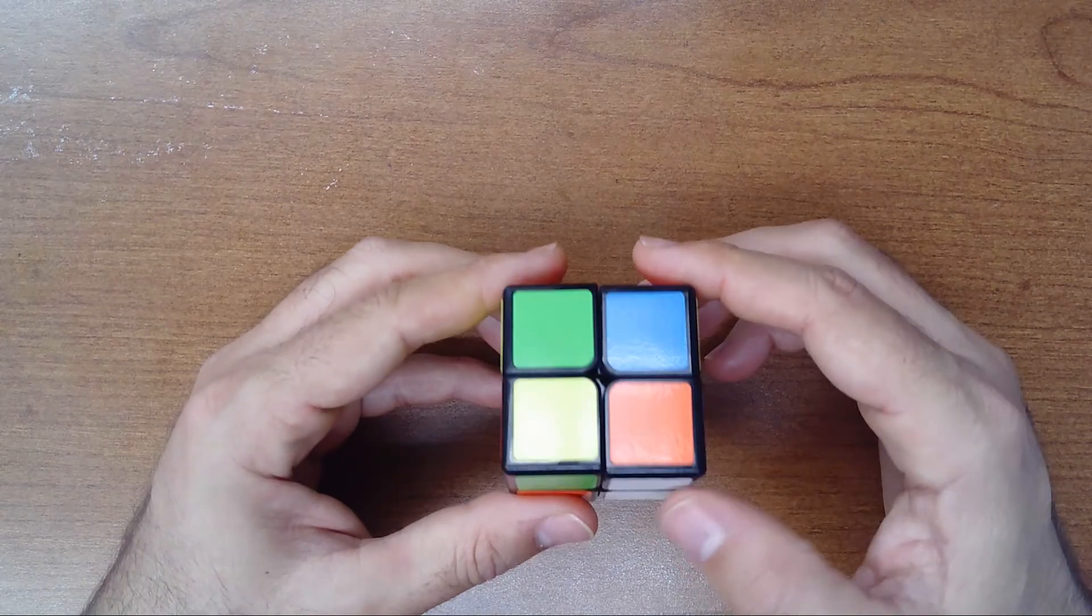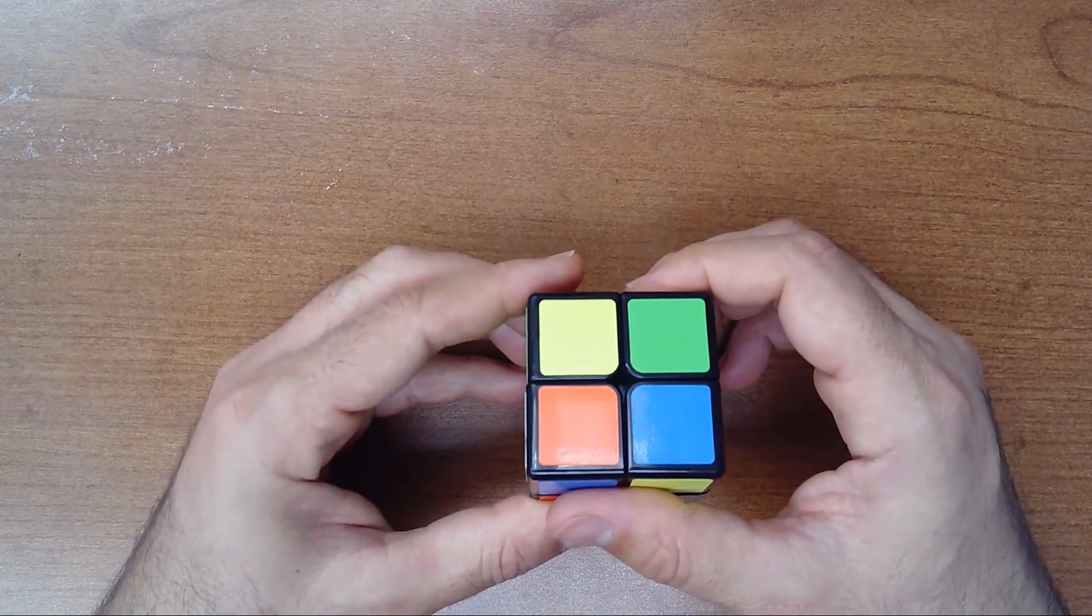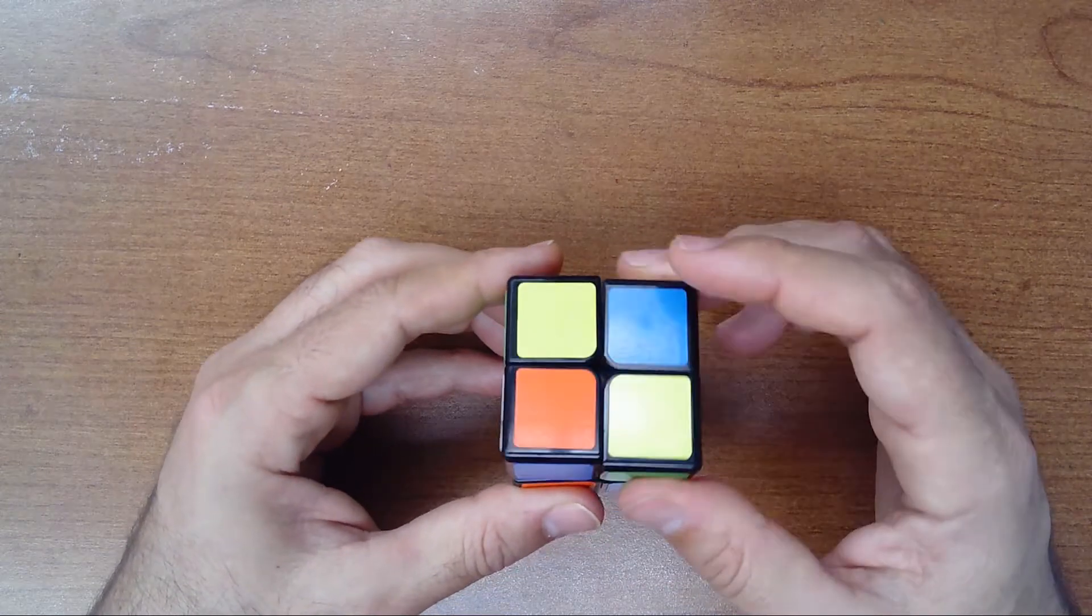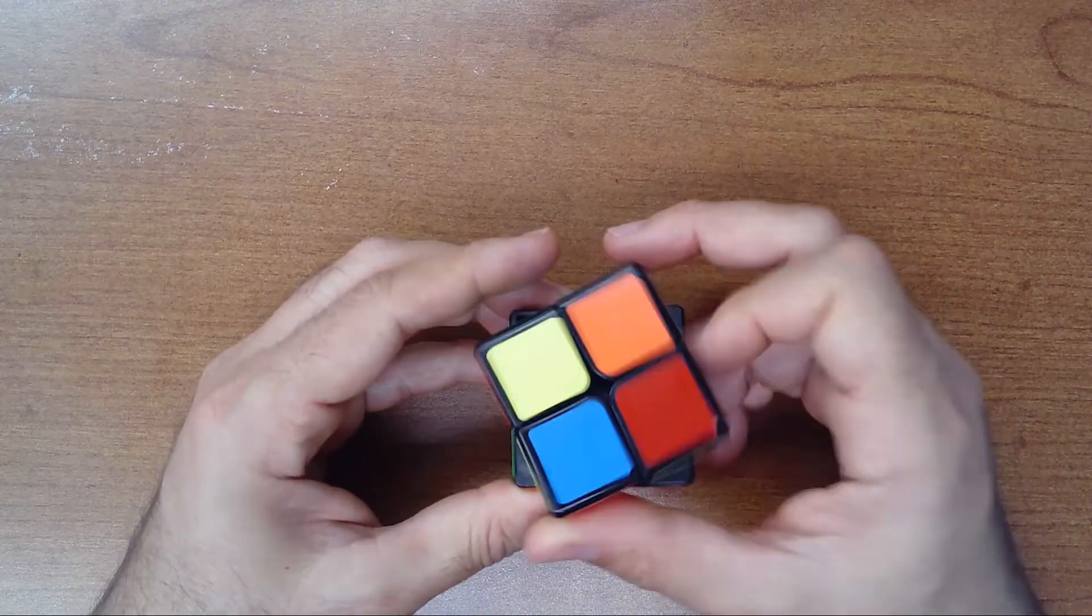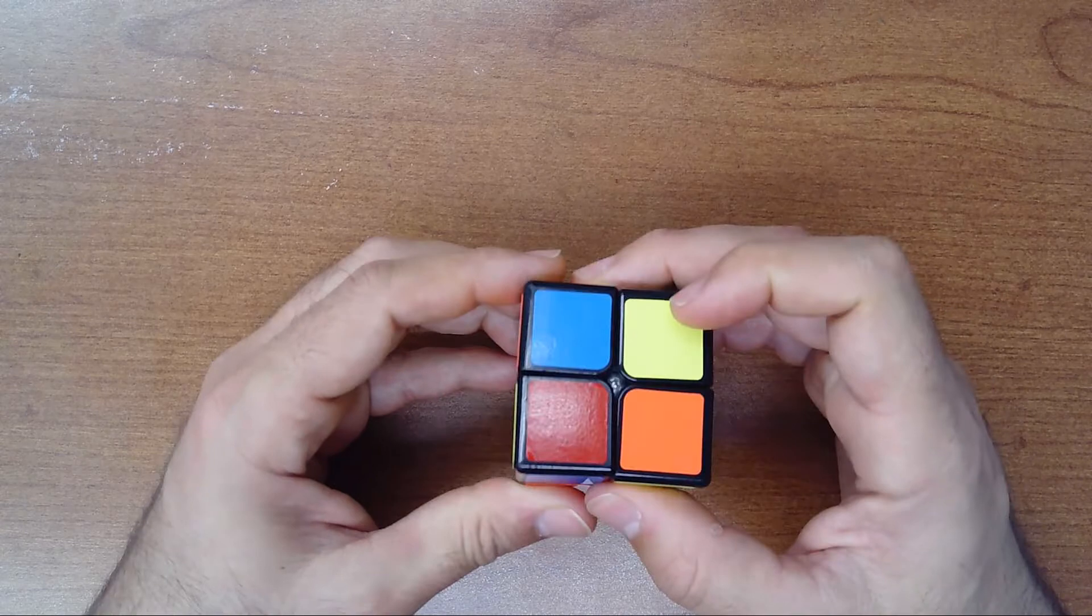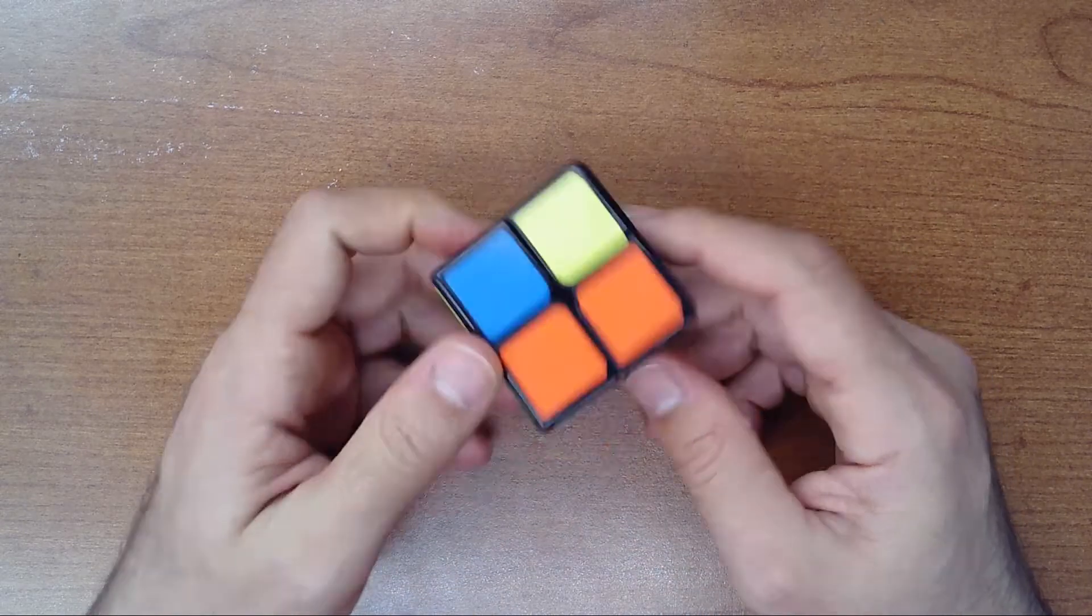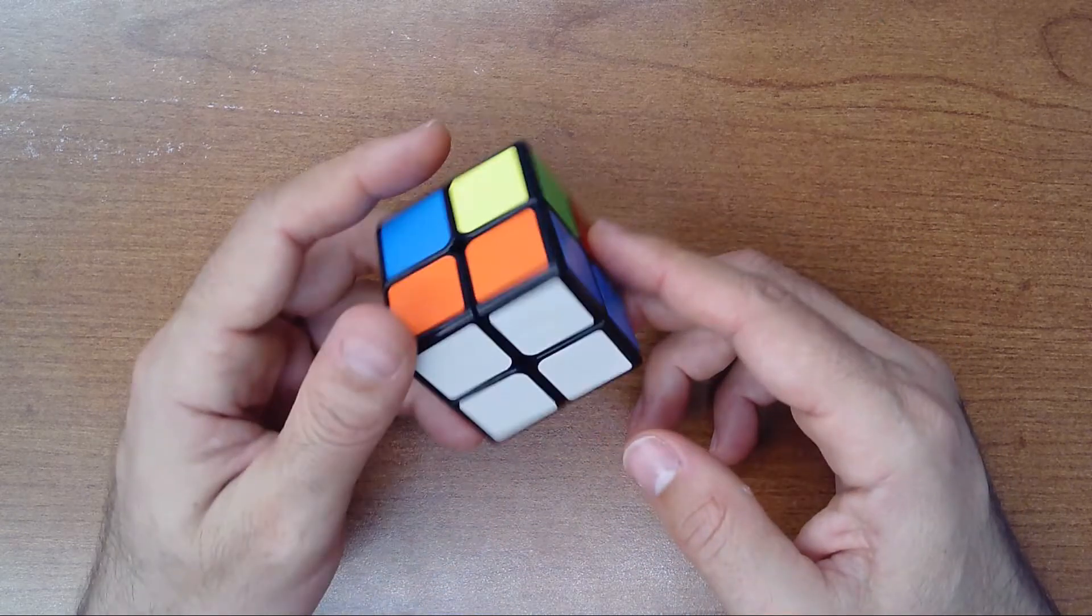Right up, this this this this, two times and go back. Now do you see here, I have the yellow. It's the only one I'm missing.